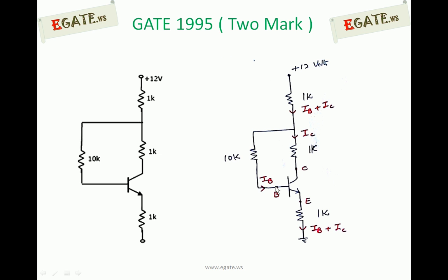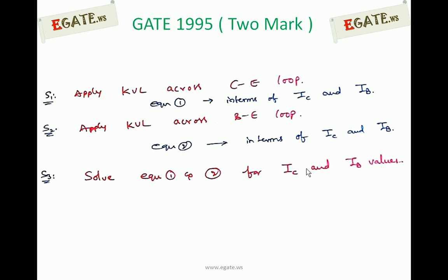We also identify the voltages: there is a voltage between base and emitter (VBE) and a voltage between collector and emitter (VCE). When applying KVL across the collector-emitter loop, do not use IC equals beta times IB — keep IC and IB as independent terms. You will get one equation in terms of IC and IB.